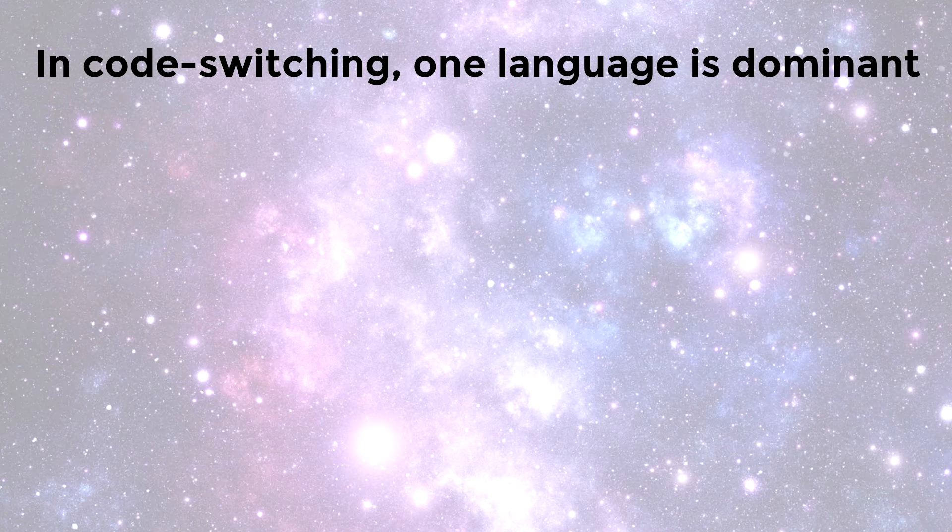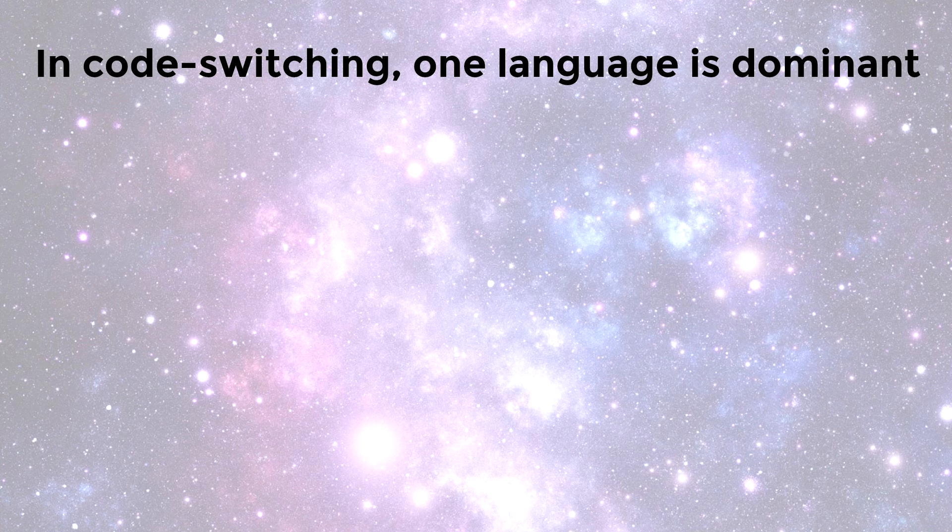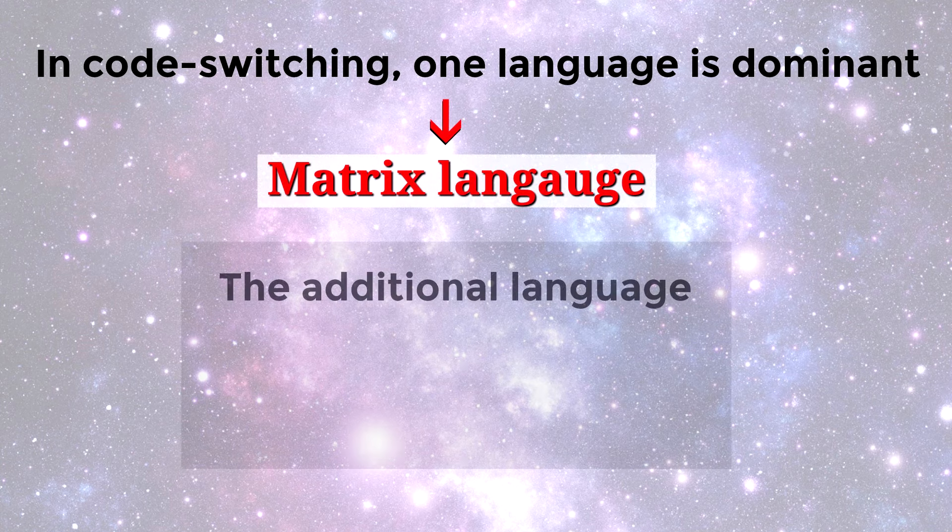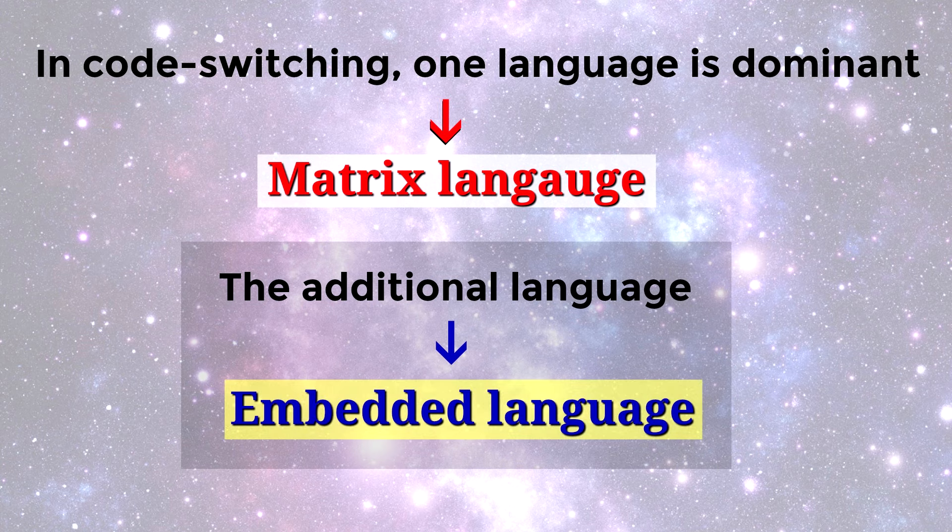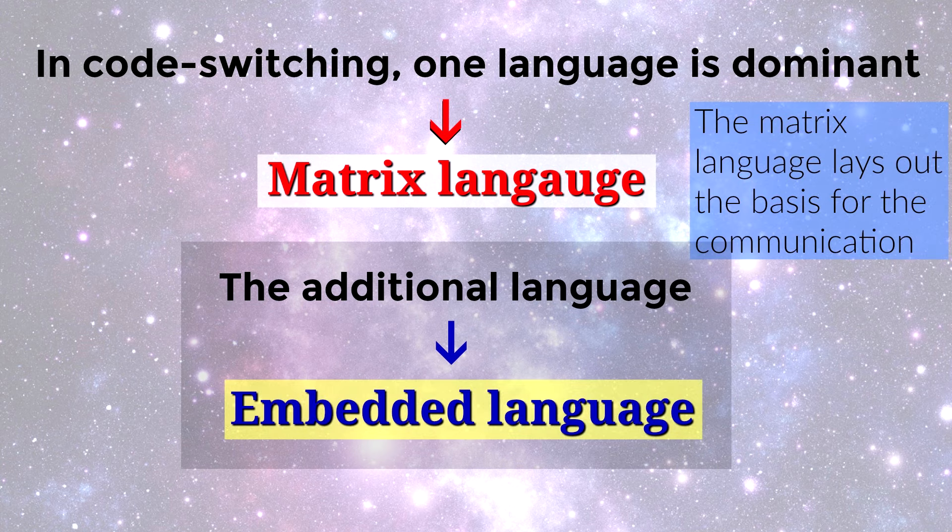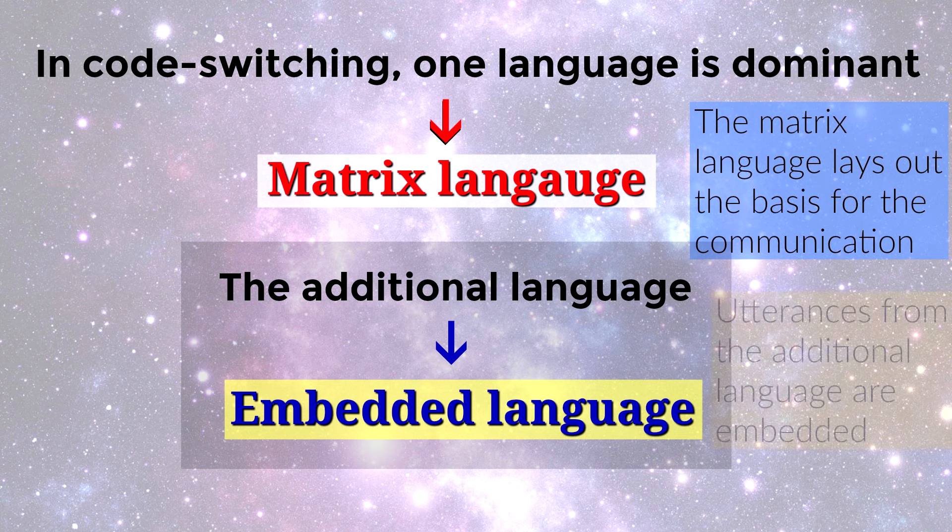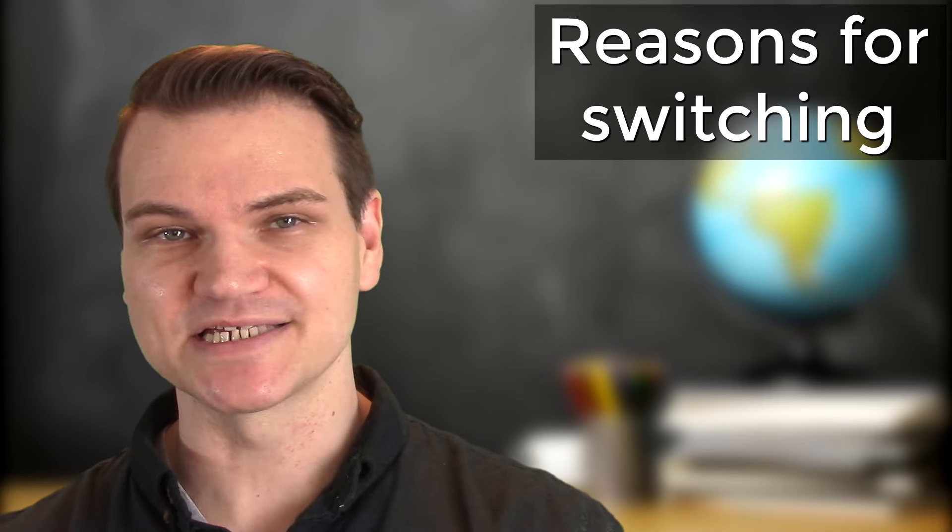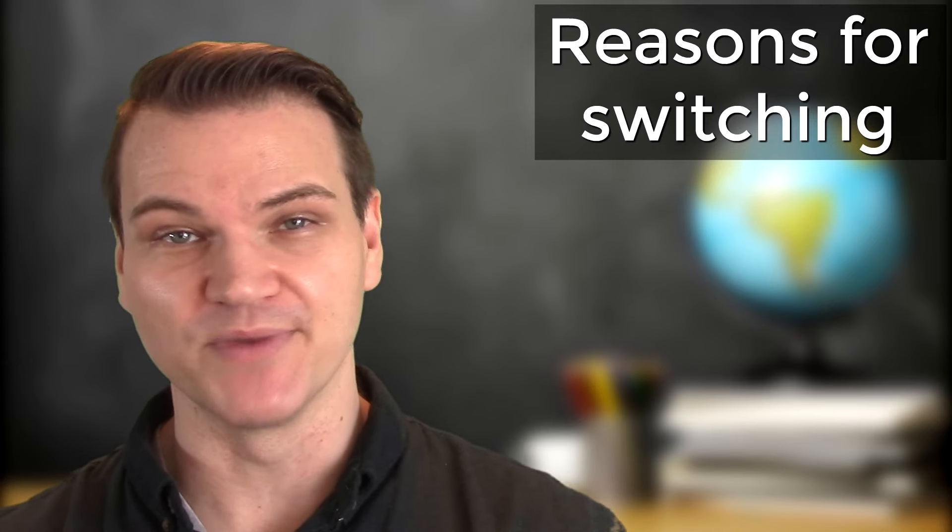In code switching, one language is the dominant language, normally the native language of the group. This is sometimes called the matrix language and the additional language is called the embedded language. The matrix language lays out the basis for the communication and then utterances from the additional language are embedded into the matrix language. There are various reasons that people might switch from their matrix language to an embedded language.